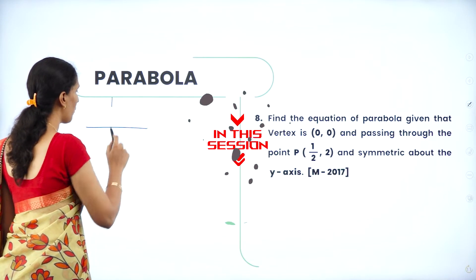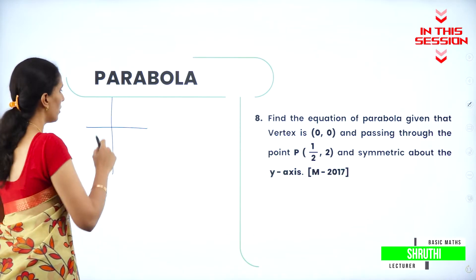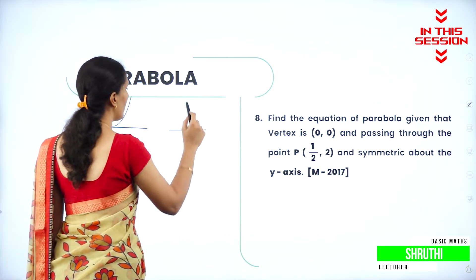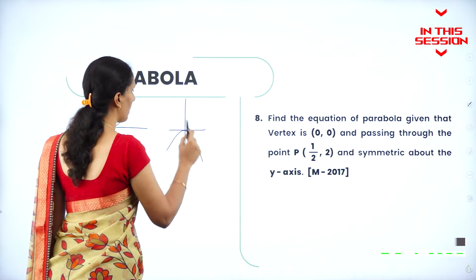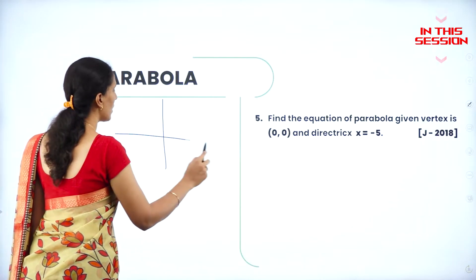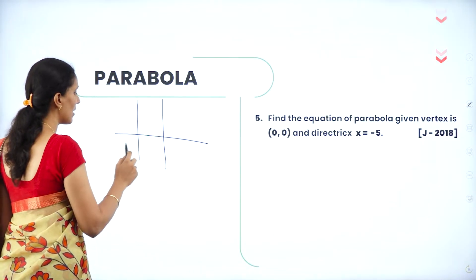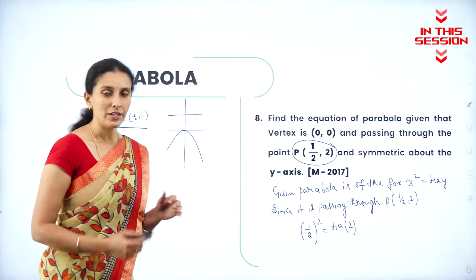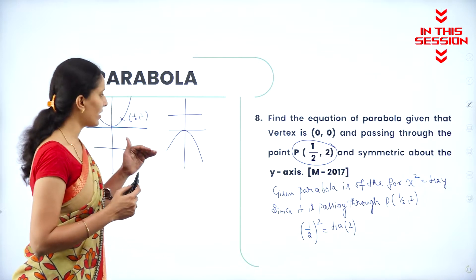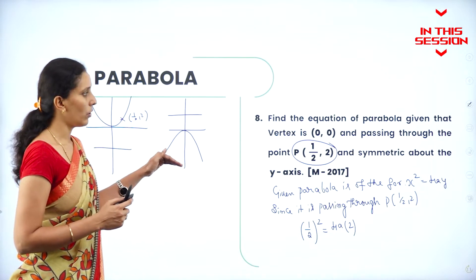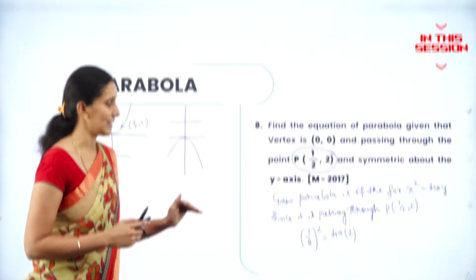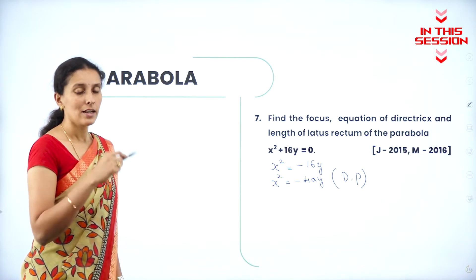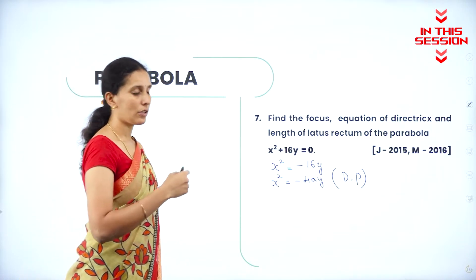If the parabola is symmetric about the y-axis, we have two parabolas: one is an upward parabola, another one is a downward parabola. Directrix x equals minus 5 means the directrix lies on the negative side of the x-axis. So first we need to find out the orientation — whether it is an upward or downward parabola — based on the symmetric axis. For a downward parabola, the focus will be on the negative y-axis and the directrix will be on the positive y-axis.